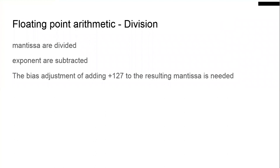In this video, we are going to see about floating point arithmetic division. So how we are going to carry out floating point division: first we have to divide the mantissas, and then the exponents are subtracted. Whereas in multiplication you add the exponents, here you subtract the exponents, then you have to adjust the bias of the result by adding 127.